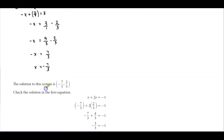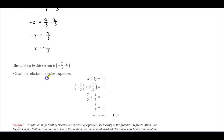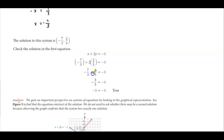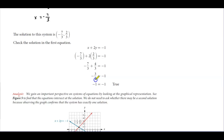So the solution to this system of equations is x equals negative 7 thirds and y equals 2 thirds. Checking the solution in the first equation, x plus 2y equals negative 1: negative 7 thirds plus 2 times 2 thirds becomes negative 7 thirds plus 4 thirds, which equals negative 3 thirds, which gives you negative 1. This equals the right side of the equation, so it is true.